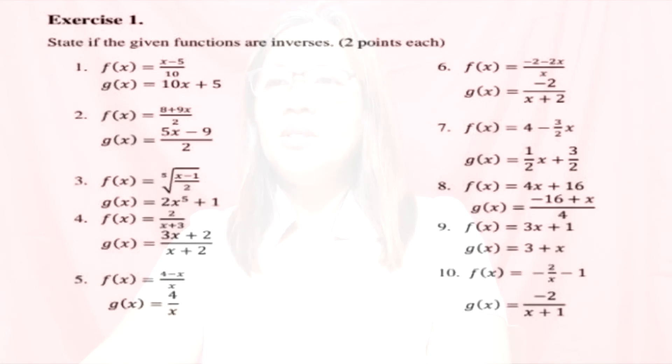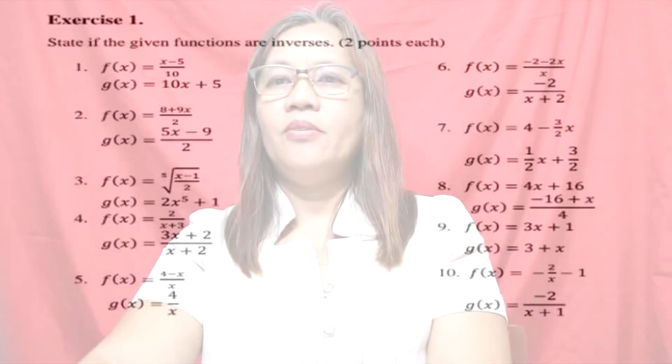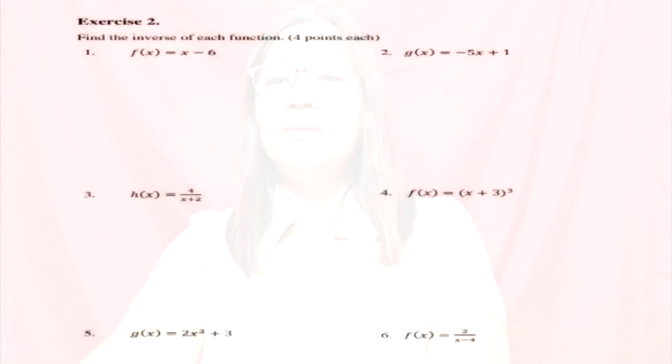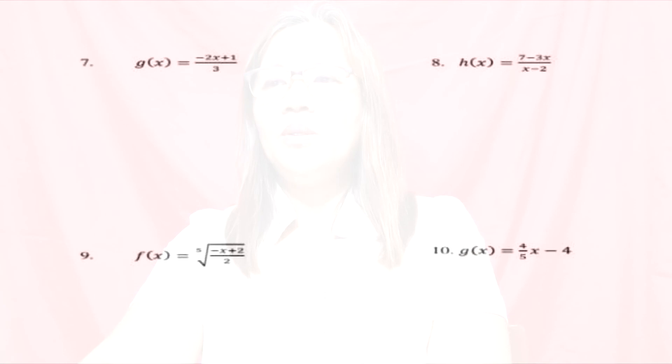For your activity and assessment, you are going to answer exercises 1 and 2. For exercise 1, state if the given functions are inverses of each other — equivalent to 2 points each. For exercise 2, find the inverse of each function — equivalent to 4 points each. From numbers 1 to 10, choose 5 problems only. That's all for today. I hope you learned how to find the inverse of a one-to-one function. This is Teacher Riza. Till our next video lesson. Bye!